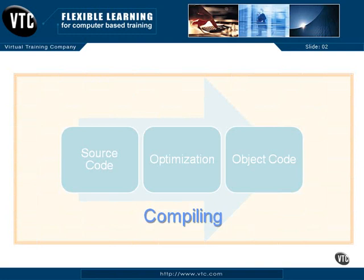Now the object code cannot run by itself. The object code generally needs to load DLLs — dynamic load libraries — or other code that is necessary for the program to actually function. We don't need to write all the operating system programs over and over again, so there are libraries of that code already created that will be linked in with our program. And to do that, we use a linker.